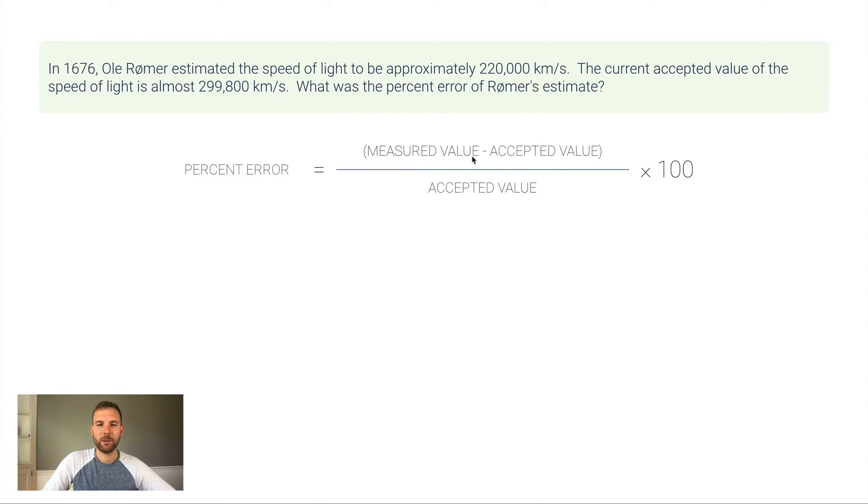We're going to use our percent error equation. This time, the measured value is Rømer's 220,000, so 220,000 minus what we now know is the accepted value, 299,800. Notice the measured value is smaller than the accepted value, so this result will be a negative number, meaning our overall percent error is negative. I'm going to divide by 299,800 and then times 100.